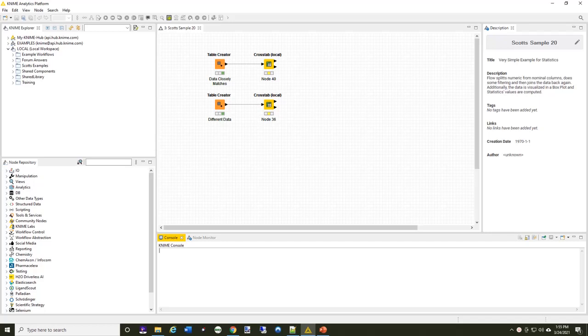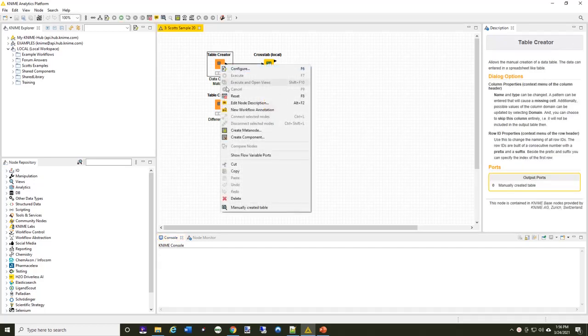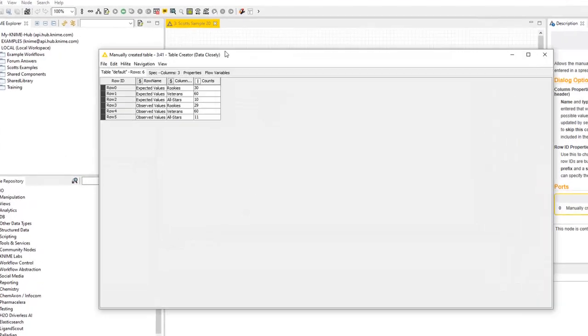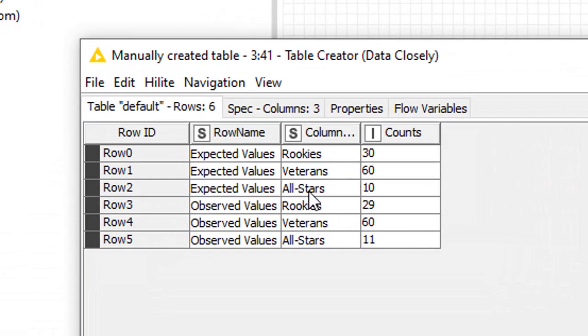I do want to take a minute to show you how I can do something slightly different with this same type of chi-square analysis within KNIME. I'm going to take a look here at some data that I've produced as a simple table. You see I've got expected values—rookies, veterans, all-stars, and some numbers—and then the observed values. In this case, the numbers are very close. Rookies are 30, the observed is 29, 60 and 60 were the same, and 11 and 11.